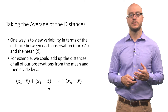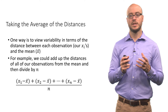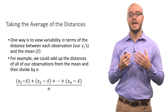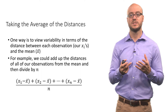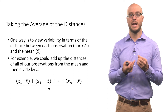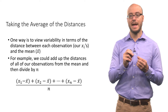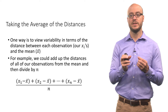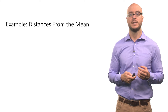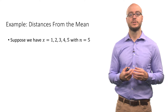Let's look at a few examples. The notation for this sort of average of distances from the mean is: for each observation, you subtract out the mean to get the distance from the mean, you add up all those distances or deviations, and then divide by the total sample size.